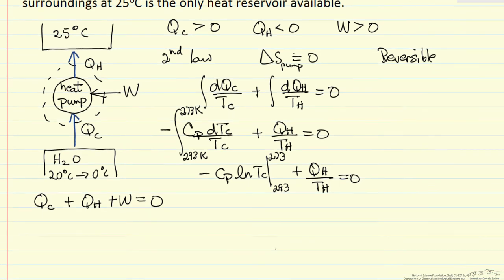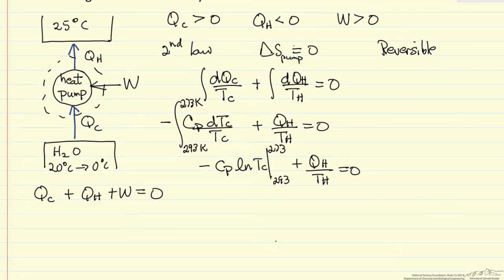And so now we can substitute in values here. So QH is going to be TH times heat capacity of water, the log 273 over 293.